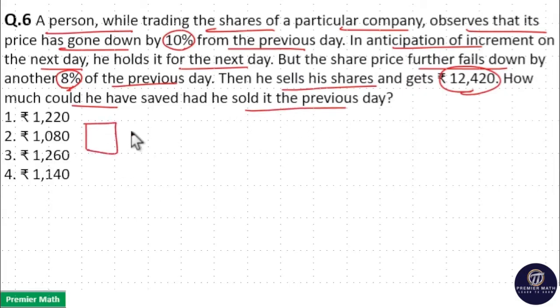Here, share price gone down to 10% from the initial value. And again, the share price decreased to 8% from the previous day. Now, after this 8% decrement, he sold the shares at $12,420. That is, this 8% reduction leads to this $12,420. This 8% reduction is from the previous day.